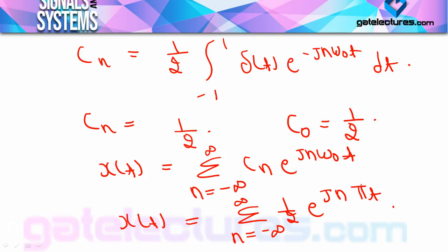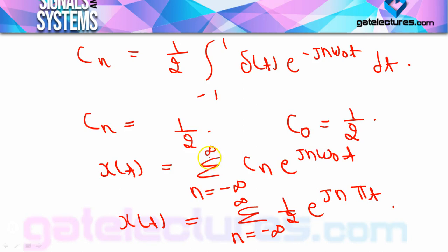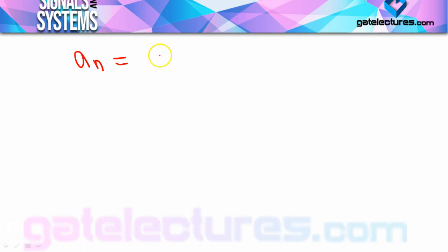Since cn is real, the imaginary coefficient bn = 0. Using the relation cn = (an − jbn)/2, and since bn = 0, we get an/2 = cn, so an = 2cn = 1. Also rn = √(an² + bn²). Since bn = 0, rn = an = 1. Once cn is known, all other coefficients can be easily calculated.